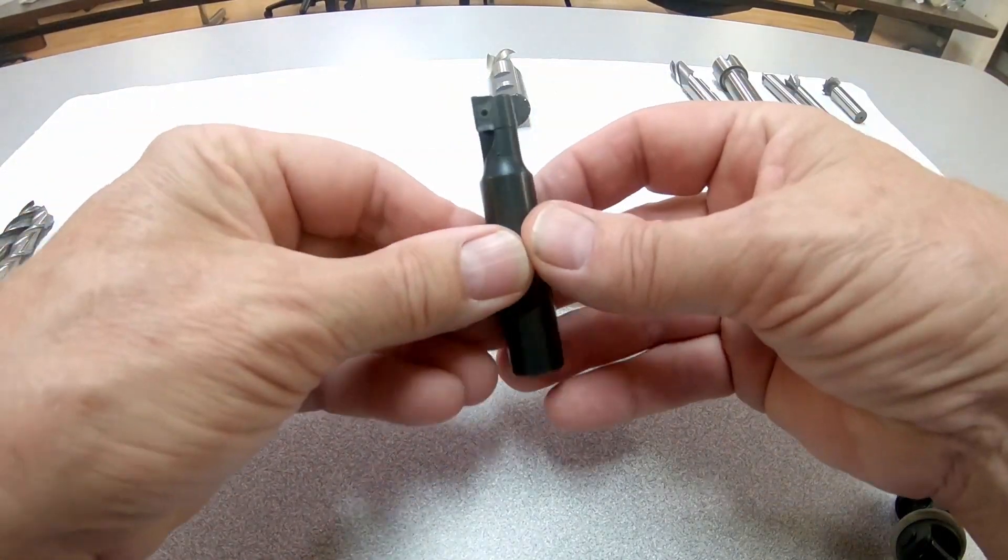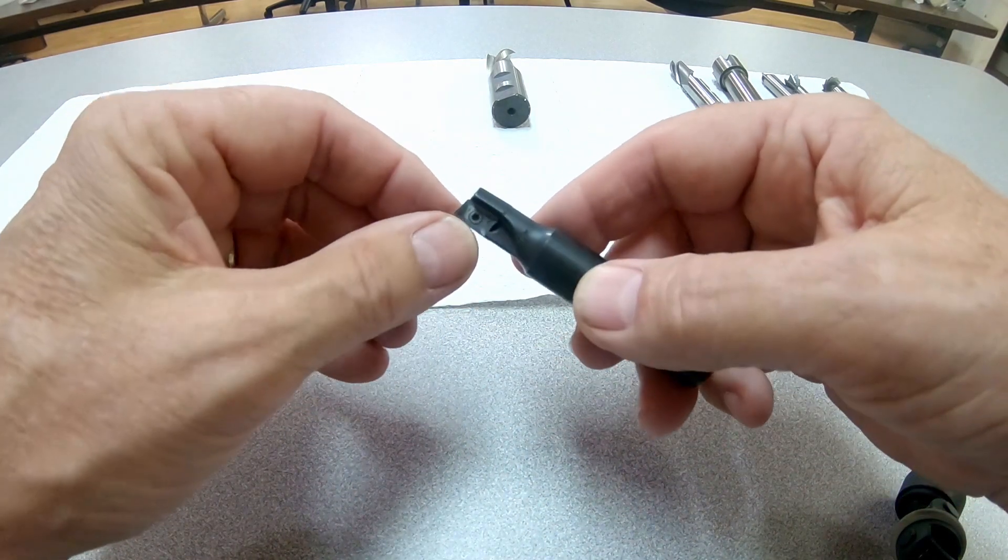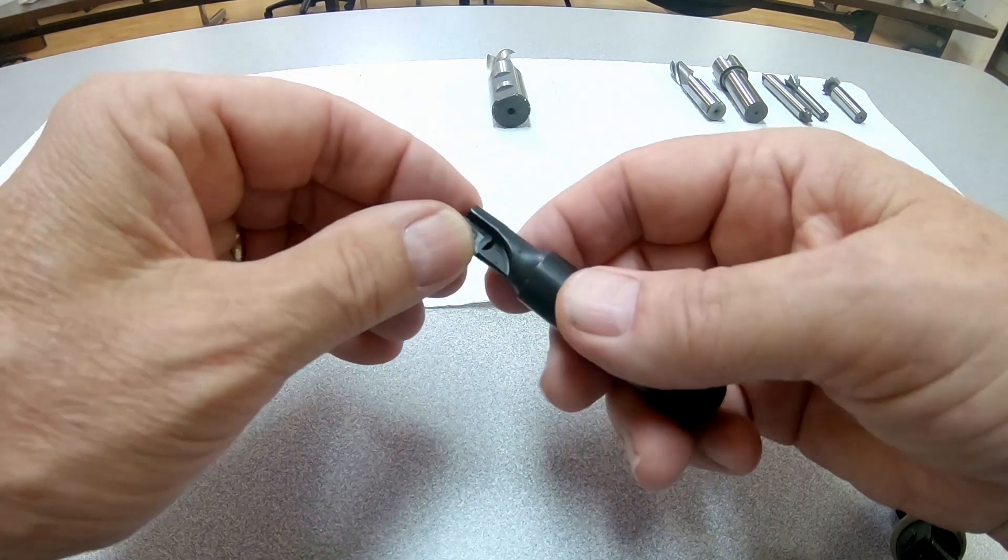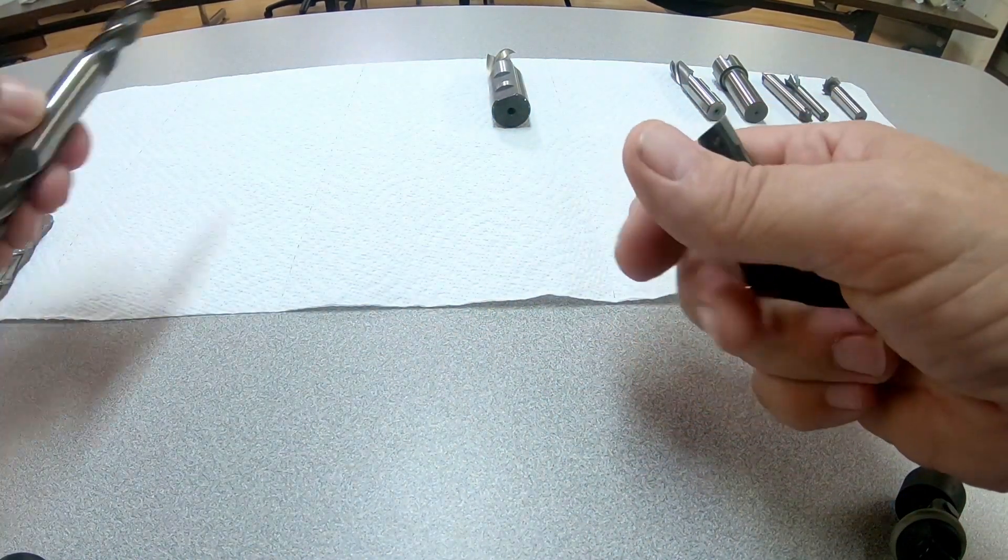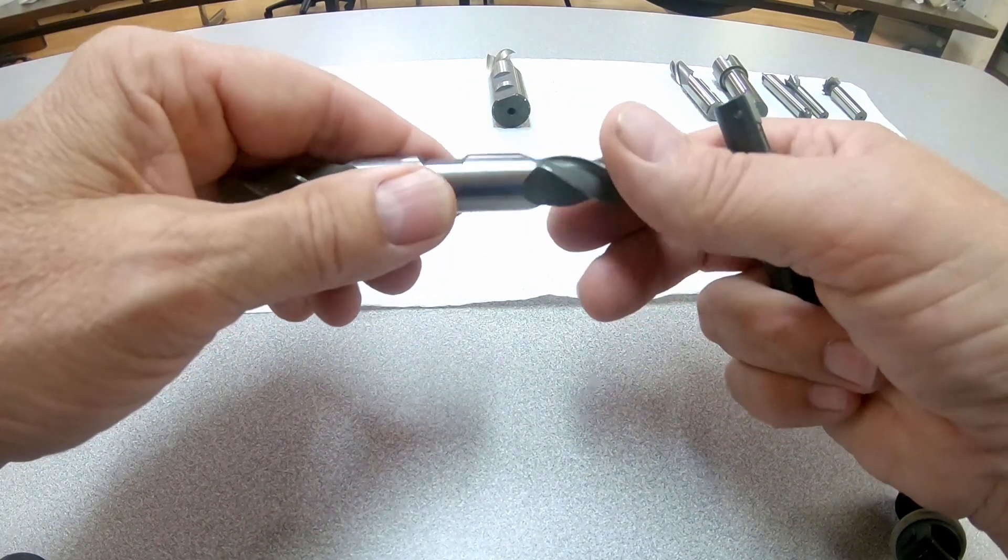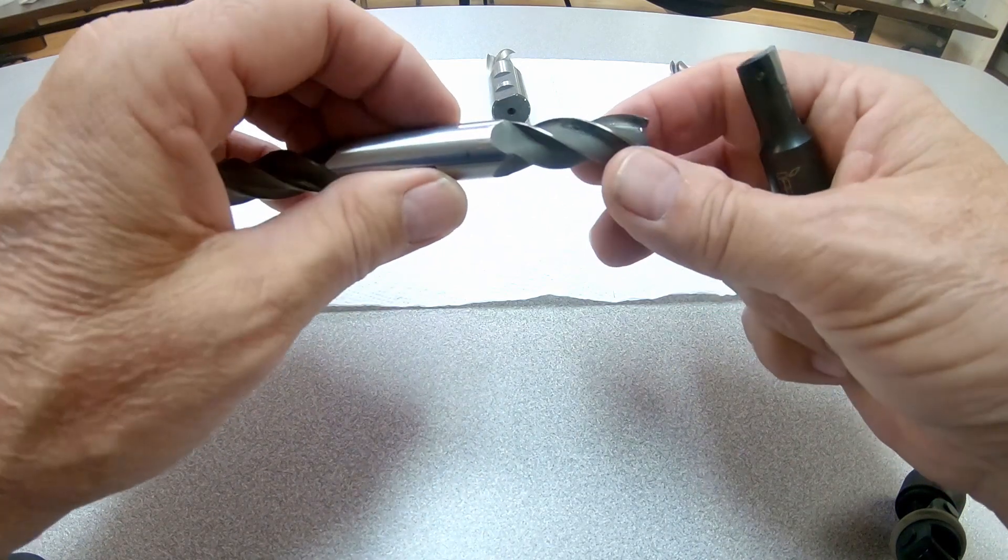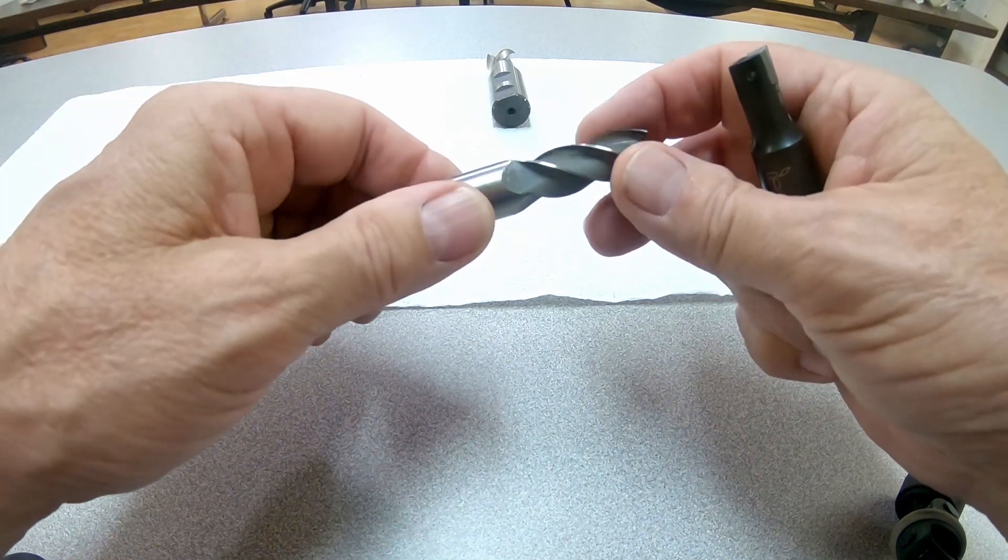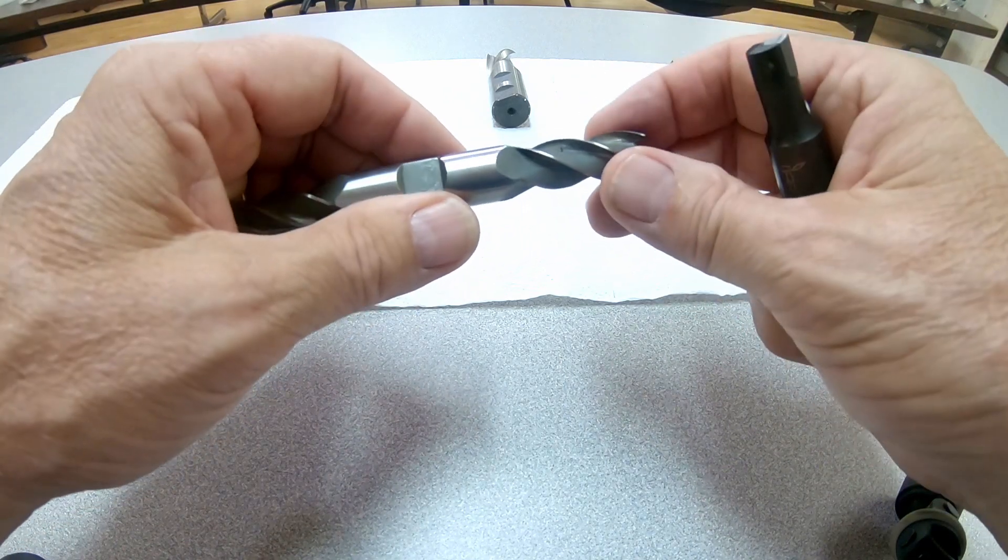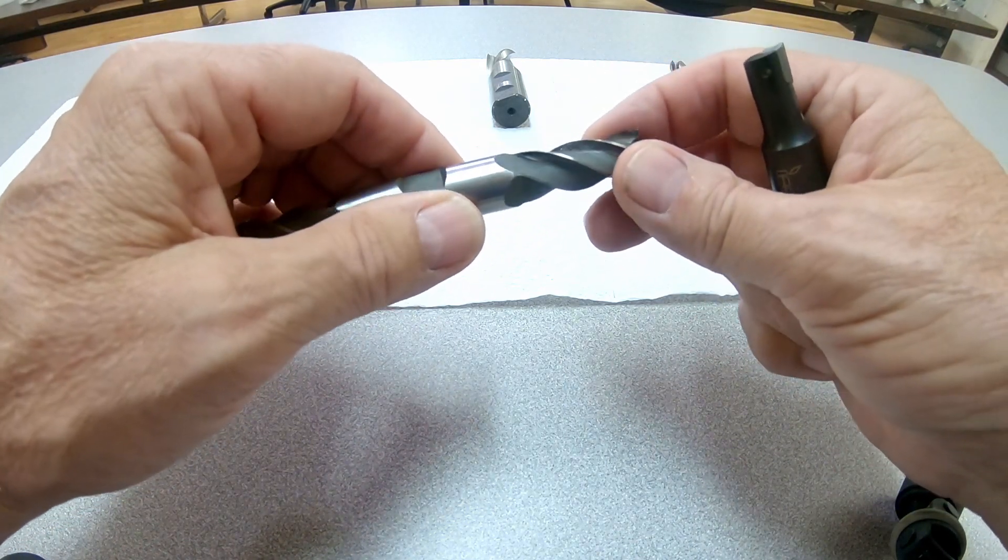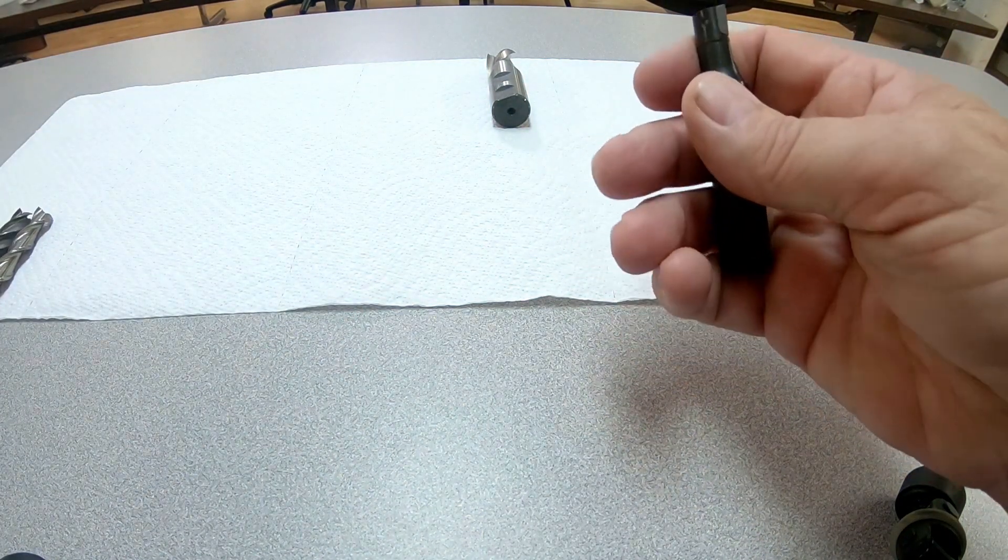They even make end mills that are carbide. This is a carbide insert. Of course you can get solid carbide end mills, and you can get cobalt end mills. These are high-speed steel. Cobalt end mills would look about the same. They're usually referred to as M42. They're a bit more expensive. They last longer. They hold up to abrasion better. But they are a good bit more expensive and a little bit more brittle because of the hardness.